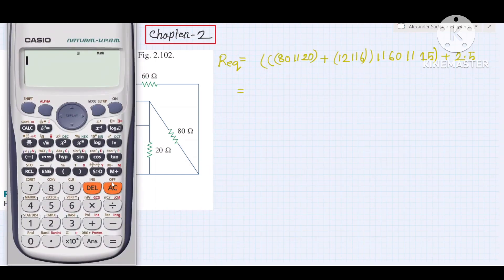Now we calculate using calculator. At first, 80 in parallel: inverse 1, then plus 20 in parallel inverse 1, close, inverse 1, then plus 12 in parallel.